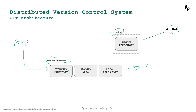Until then, the staging area and local repository do not exist. Once you do 'git init' — a command we'll look at in the future — the staging area and local repository are created. Everything in the working directory can then be pushed to the local repository using various commands. Once initialized, git can track changes to your repository with 'git status'.